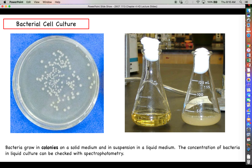Bacteria growing on solid medium form colonies as seen on this plate — you prefer colonies to be as spaced out as possible so you can pick particular ones. In liquid medium, bacteria grow in suspension — you can see the difference between a flask of plain Luria broth (clear) and one with a high concentration of bacteria (cloudy). If you are growing bacteria in liquid culture, you can check approximately how confluent the culture is using spectrophotometry — the more bacteria present, the less light passes through the sample.